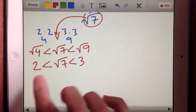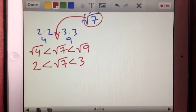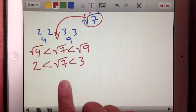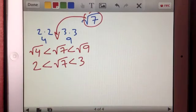So square root of 7 falls somewhere between 2 and 3, but I don't know if it's closer to 2, closer to 3. I don't know what the decimal expansion is yet.